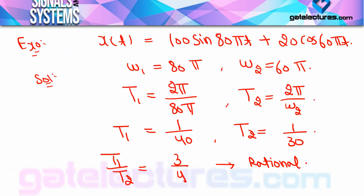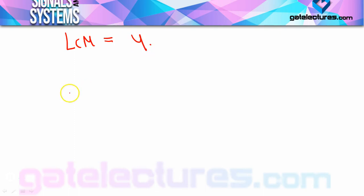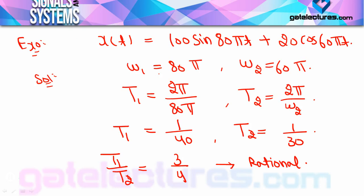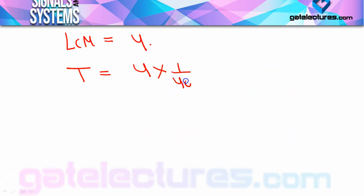Overall signal periodic है — यह fix हो चुका है। अब LCM निकालेंगे denominators of step 2 का। T₁/T₂ = 3/4 — denominator है 4। LCM of 4 = 4। Overall time period = LCM × T₁ = 4 × (1/40) = 1/10 second। इस procedure को हमने numerical के through step-by-step analyze कर लिया।